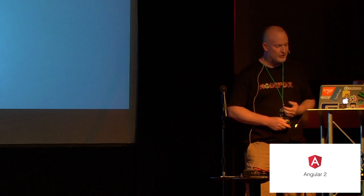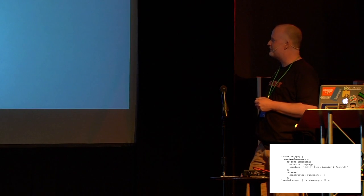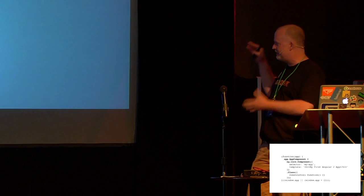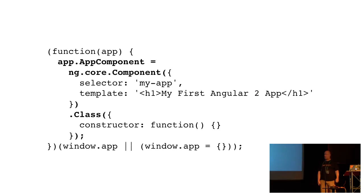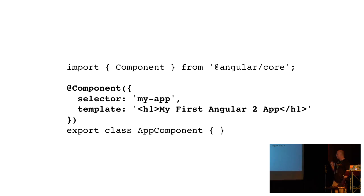If we look at a real-life example, this is going to be an Angular 2 component. The first version is the imperative version. We have our app component, which is a property being defined on this app object. We're making a call to ngCore component and passing in a configuration object literal. It has a selector property — 'my-app' is the element this component is associated with — and the template is the visual part of this component.